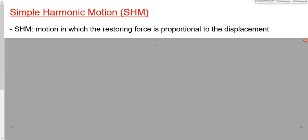Whenever we have a restoring force — a force pulling something back to where it started — and that restoring force gets bigger as the object gets further away from where it started, then that's simple harmonic motion. A perfect example is that elastic. When I stretch it, I have to pull harder and harder for it to stretch more and more. So as the displacement of the elastic gets bigger, the force I have to pull gets bigger. Therefore, the restoring force — the force pulling back the other way, the equal and opposite force — has to get bigger as the displacement gets bigger.